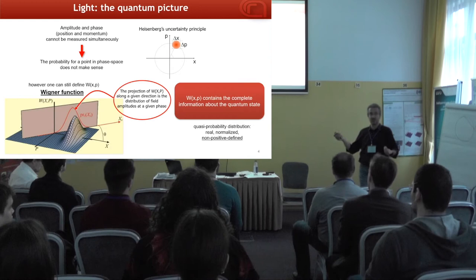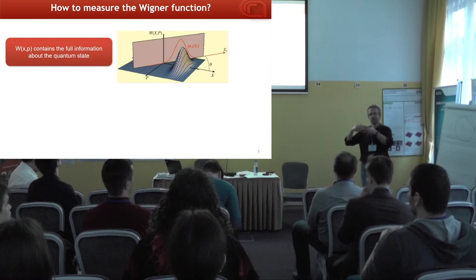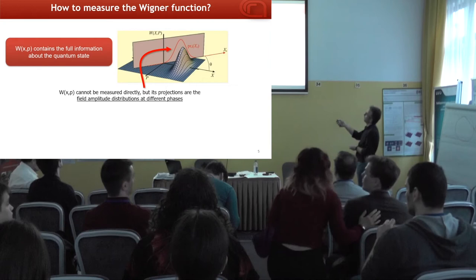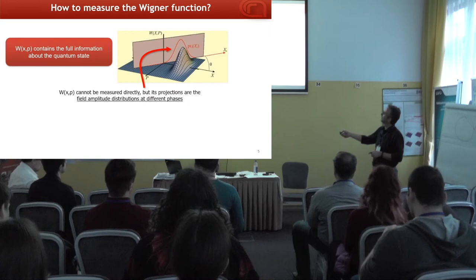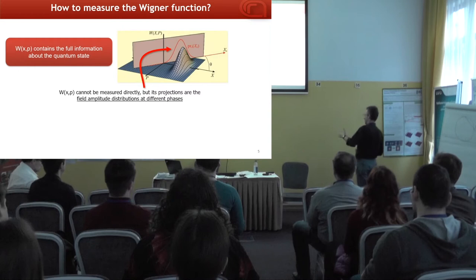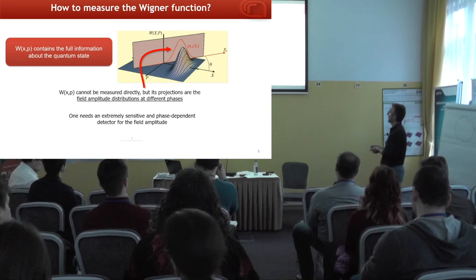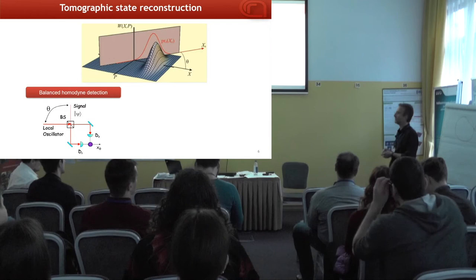The Wigner function still has the nice property that if you project it in any direction at any angle, that gives you the probability distribution of a field amplitude at that particular phase. To characterize a quantum state of light, you want to find this Wigner function. You cannot measure it directly, but you can exploit its properties — specifically that its projections are something you can measure. You need to measure the field amplitude distribution at different phases, requiring a phase-sensitive interferometric method: balanced homodyne detection.